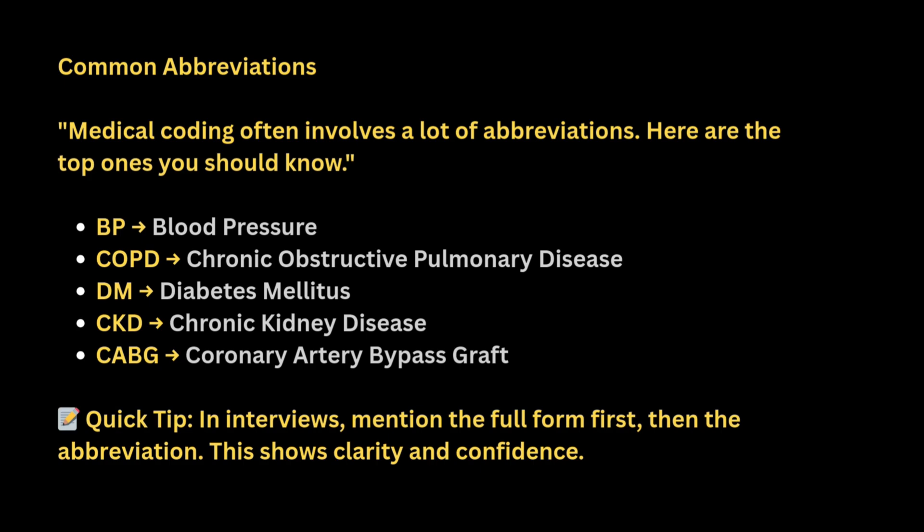Common abbreviations: medical coding often involves a lot of abbreviations. Here are the top ones you should know — BP: blood pressure; COPD: chronic obstructive pulmonary disease; DM: diabetes mellitus; CKD: chronic kidney disease; CABG: coronary artery bypass graft. Quick tip: in an interview, mention the full form first, then the abbreviation — this clearly shows your confidence.